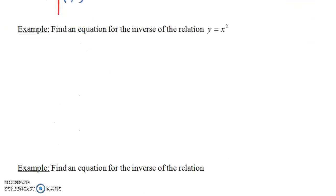Now, let's suppose we have an example where we're given an equation for the relation. Suppose we have y equals x squared. How can we find an equation for the inverse relation? Well, remember, all we're doing is flipping the x and y coordinates, so the relation is going to be x equals y squared.